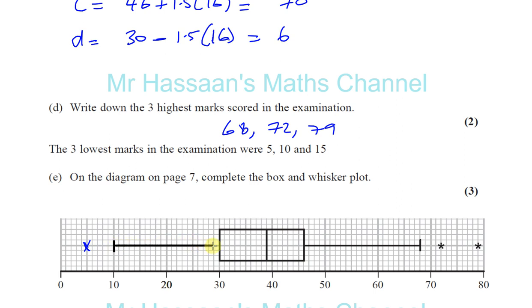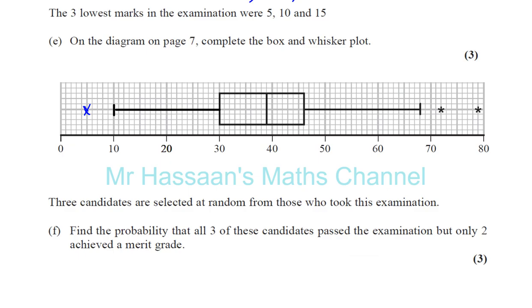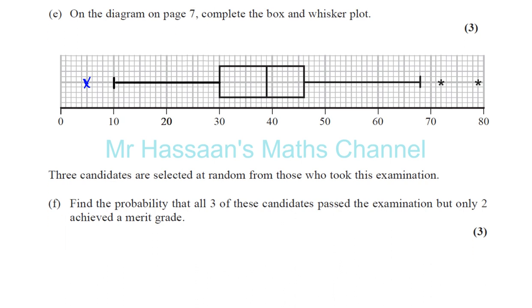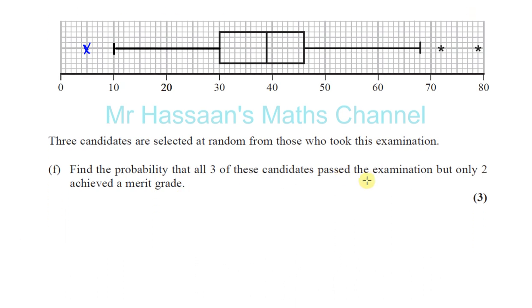And now part F. It says three candidates are selected at random from those who took the examination. Find the probability that all three of these candidates passed the examination, but only two of them achieves a merit grade. Now, the ones that achieves a merit grade are the top 25% of the students.